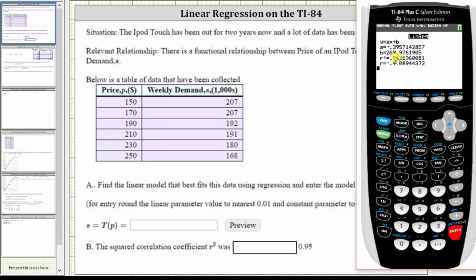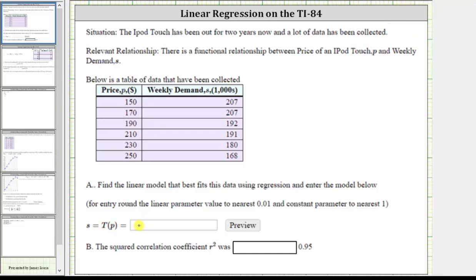Which means S, which is really a function of P, which we can also give as T of P, is equal to negative 0.40 P plus 270. Be sure to enter P here, because P is the input variable. And we could also just give the slope as negative 0.4 if we wanted.